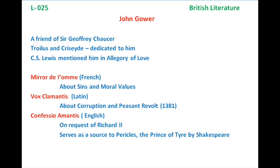Confessio Amantis was written on the request of Richard II. At that time, Richard II was concerned that there was not much written literature in Middle English, so he requested a work to demonstrate what could be achieved in English. The story is in narrative form with a prologue, expanding over eight books. The content features an old man making his confession of love to the goddess Venus.